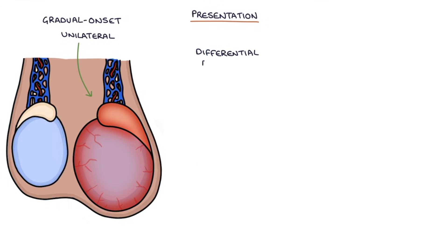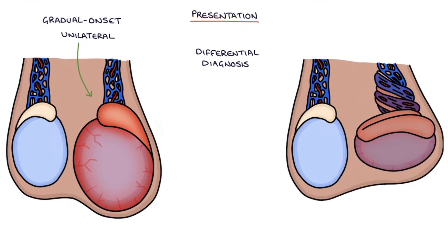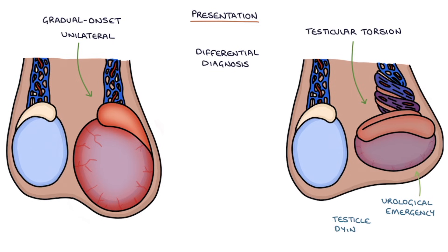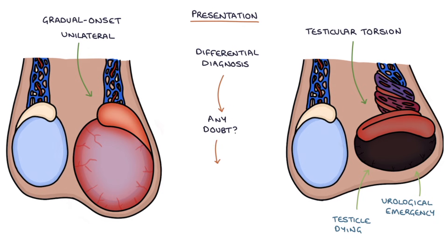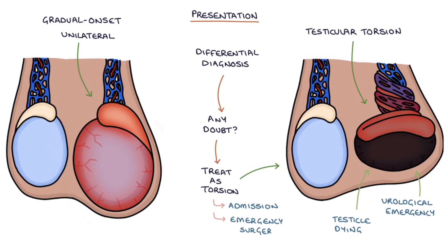The key differential diagnosis for epididymal orchitis is testicular torsion. Testicular torsion is a urological emergency that requires rapid treatment to avoid the testicle from dying. Both present similarly with acute onset of pain in one testicle. So if there's any doubt, treat the patient as though they've got testicular torsion until proven otherwise, and this will involve admitting the patient to hospital under the care of the urologist to consider emergency surgery.